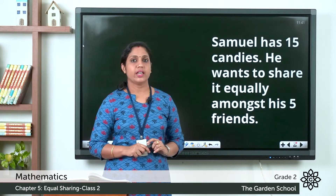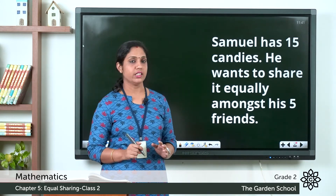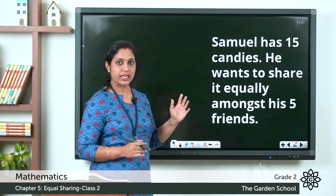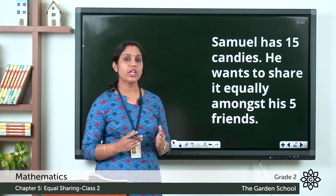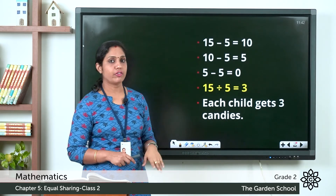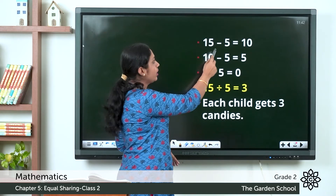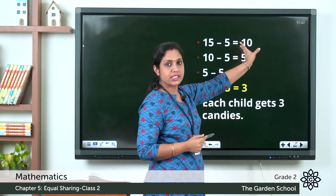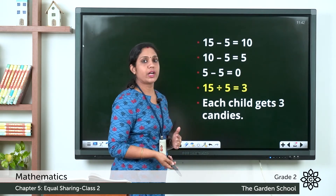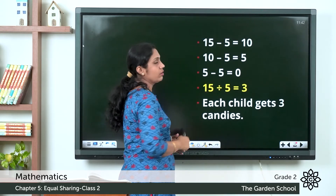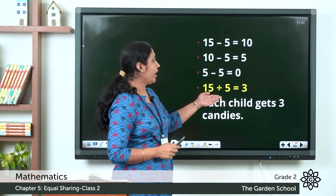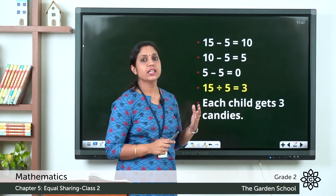Let's take another example. Samuel has fifteen candies and wants to share them equally among his five friends. He has fifteen candies and five friends. So: fifteen minus five is equal to ten, ten minus five is equal to five, five minus five is equal to zero. How many times did we subtract? One, two, three. So fifteen divided by five is equal to three — each child gets three candies.